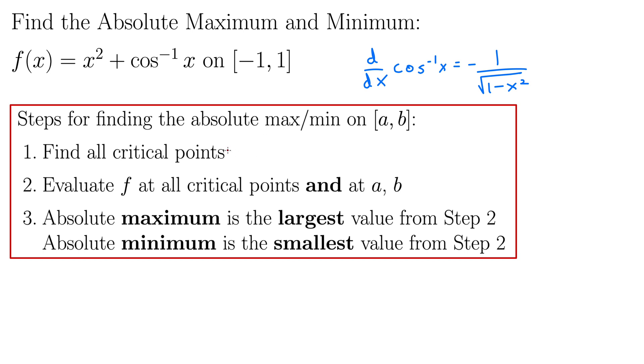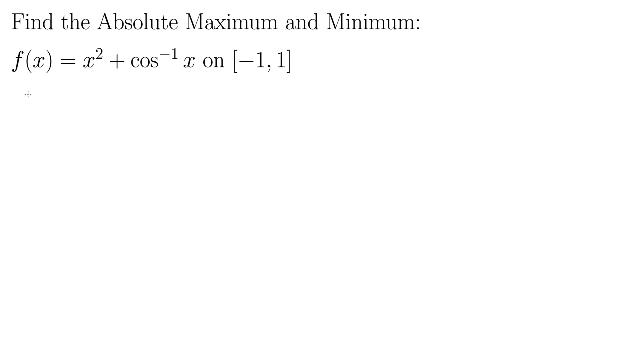Okay, let's take a look. So we need to find the critical points. Remember that's where the derivative equals zero and where the derivative does not exist. So let's start with that. Our derivative is f prime of x equals 2x minus one over square root of one minus x squared. And we need to set this to zero to see what happens here.